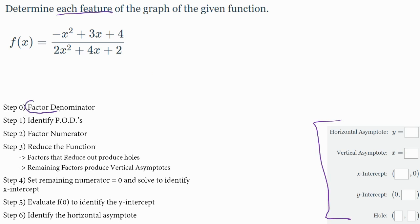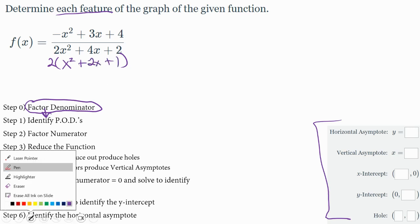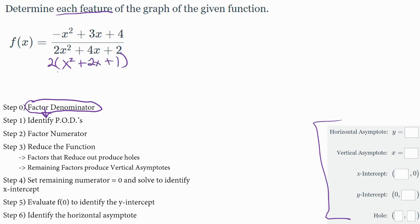Here we're going to factor the denominator as always so that we can identify our points of discontinuities. The denominator this time has a common factor of two, so I'm going to GCF factor the two out and get x squared plus 2x plus 1. Then we use the magic x method to continue. There's a 1 here and a 1 there. You might even recognize that's a perfect square trinomial.